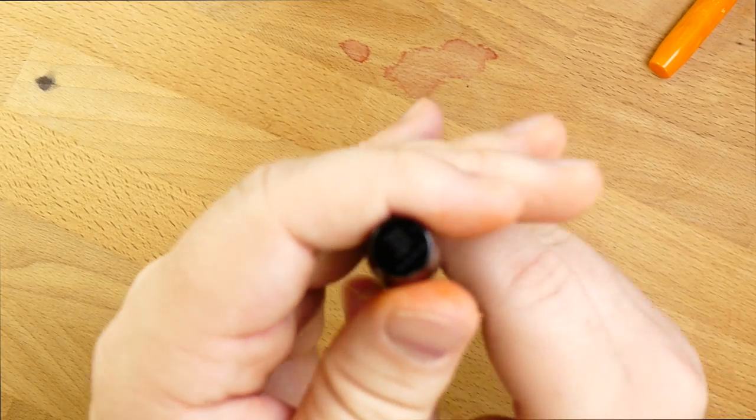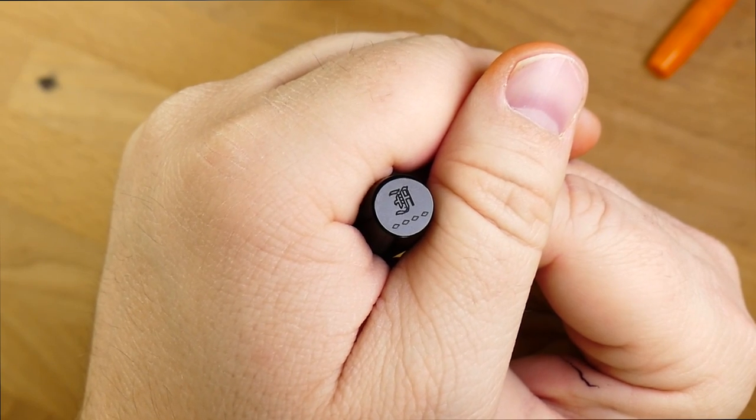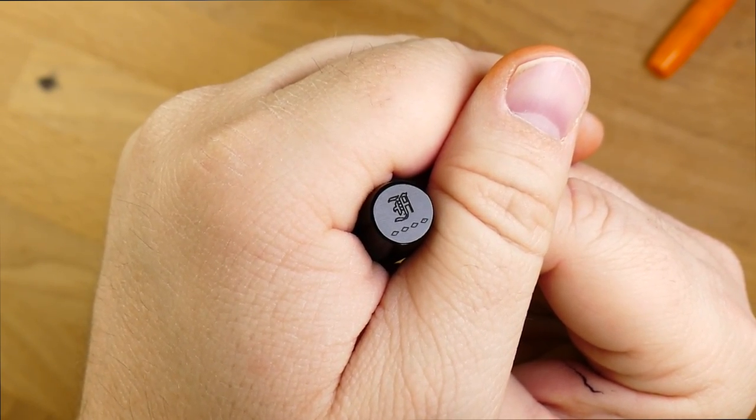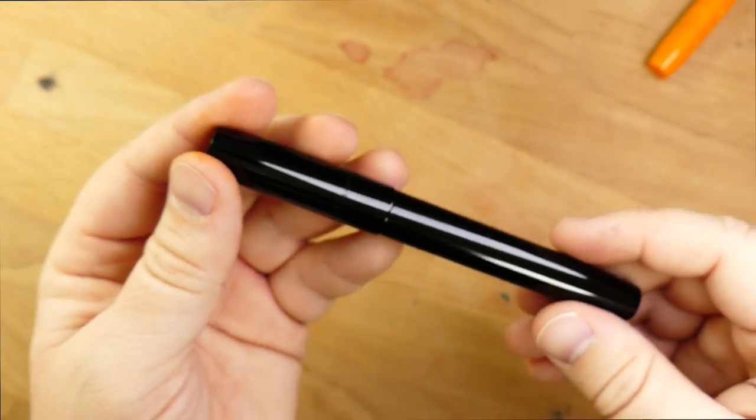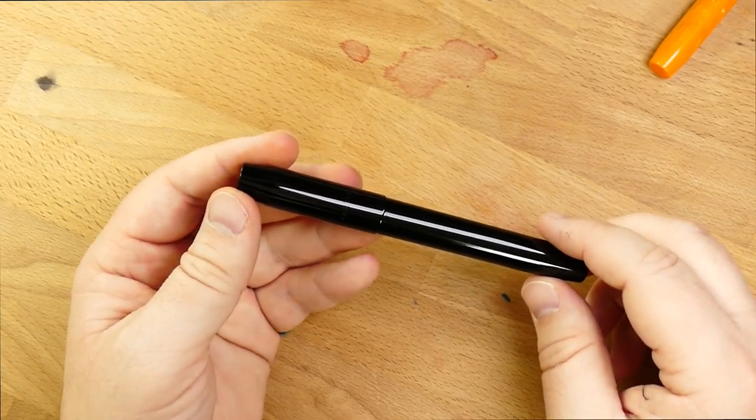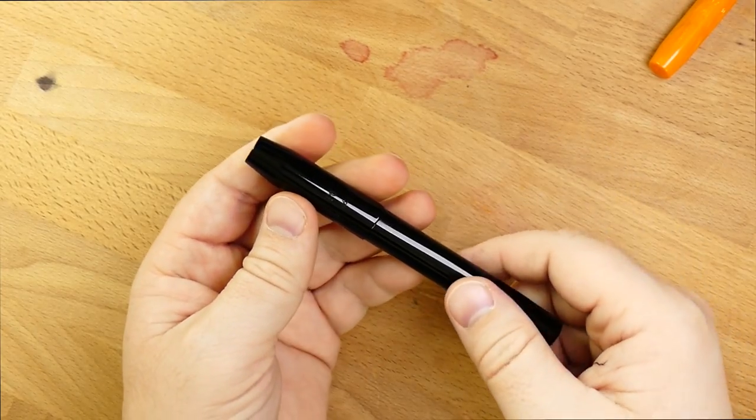And then at the very top of the cap, you have the Franklin Christoph logo there and the four diamonds. But aside from that, no other branding here. Also, you'll notice that this is a pen that does not come with a clip. They don't clip this one. There's no space in the cap, frankly, for a clip.